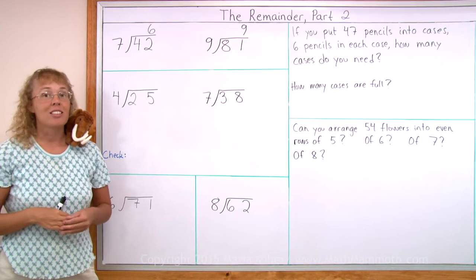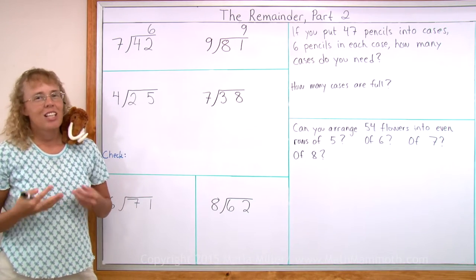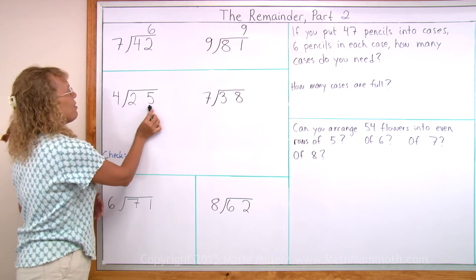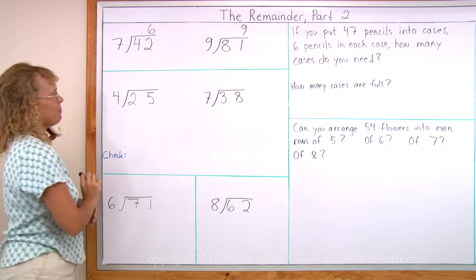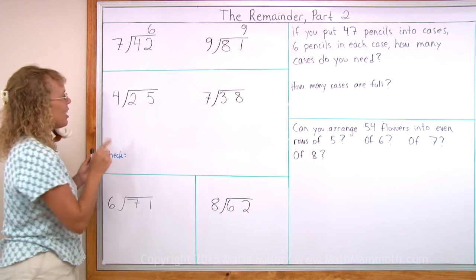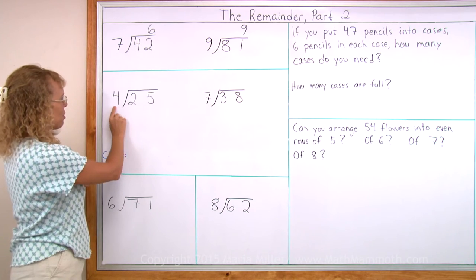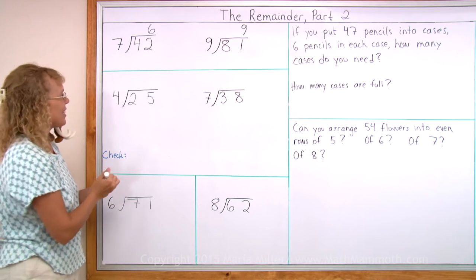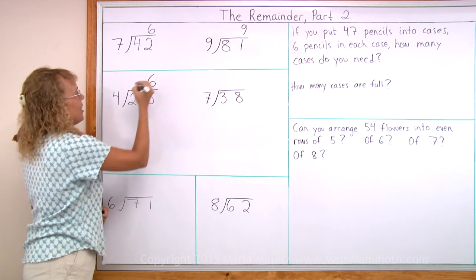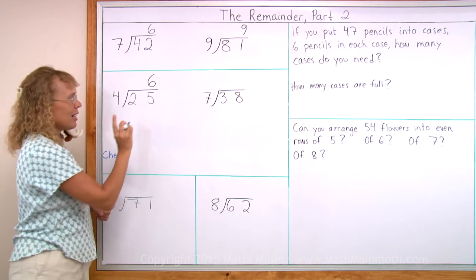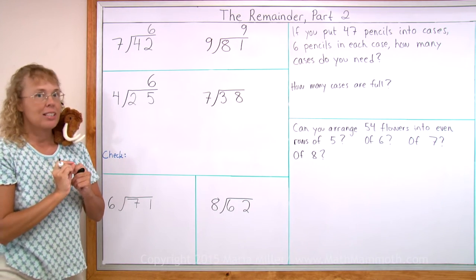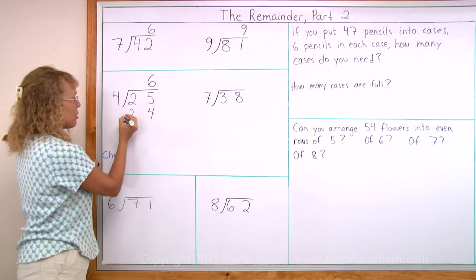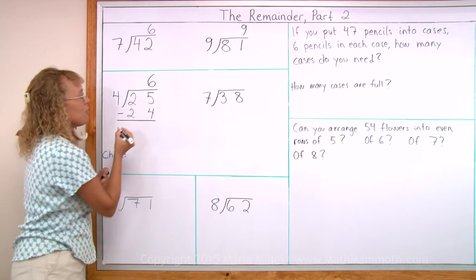Now, this way of writing the division comes in handy when we have remainders. Here I have 25 divided by 4. And like we studied, you need to think how many times does 4 go into 25? 6 times, yes. And I write the 6 here. That's my answer. 6 times. But then I multiply 6 times 4. 6 times 4 equals 24.